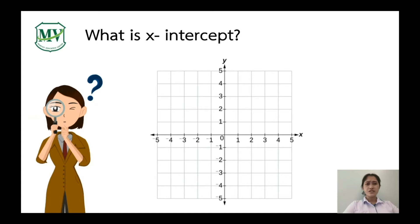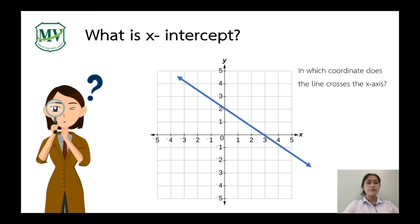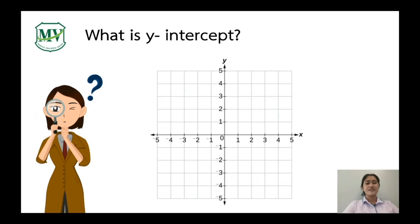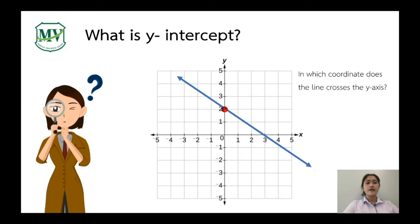The x-intercept is where the line crosses the x-axis. For this example, the line crosses the x-axis at (3, 0). Therefore, the x-intercept is (3, 0). The y-intercept is where the line crosses the y-axis. For this example, the line crosses the y-axis at (0, 2). Therefore, the y-intercept is (0, 2).